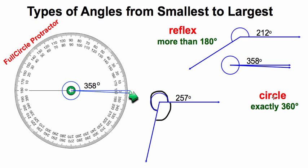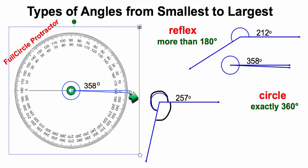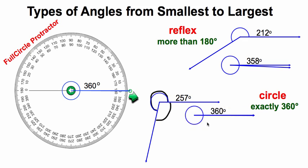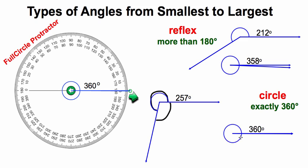Lastly is a circle, which isn't an angle — it's more of a shape. A circle has to have exactly 360 degrees. If we move that under circle, we can see that we've made a perfect circle with 360 degrees.